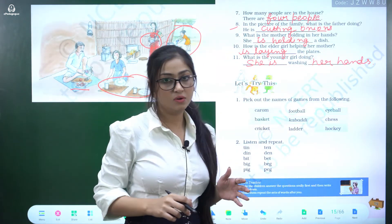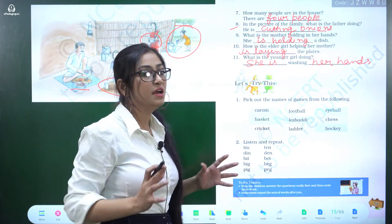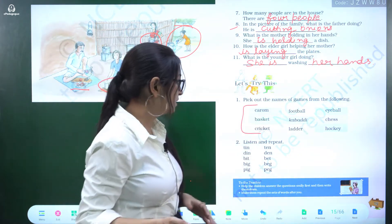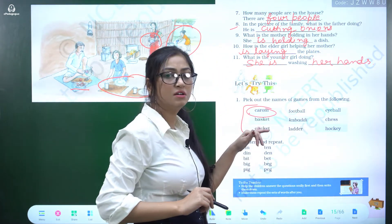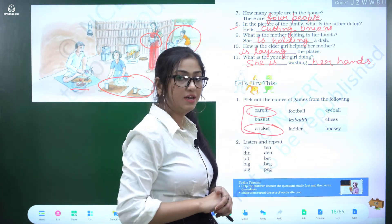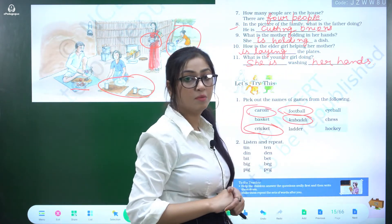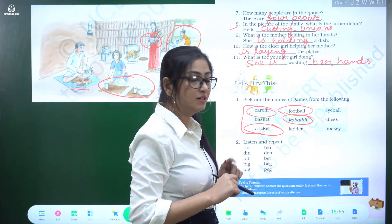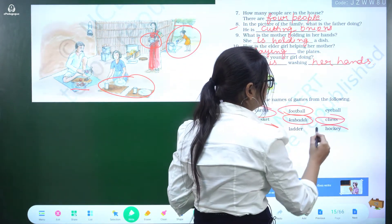Let's try this question: pick out the names of games from the following. The names of games include: carom, cricket, football, kabaddi, chess, and hockey.